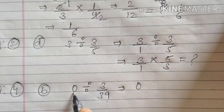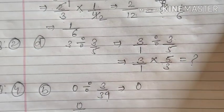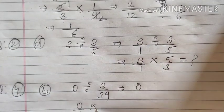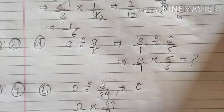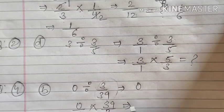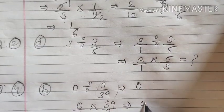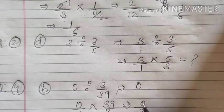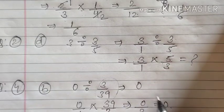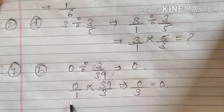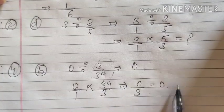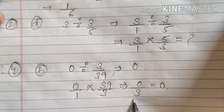If you want to calculate, you can calculate. Put here 1. 0 upon 1. Convert this divide into multiplication. Write down reciprocal of this number. 39 upon 3. Now you see, numerator into numerator. 0 into 39 is 0. Denominator into denominator is 3. 0 upon 3 will be 0. We are getting the same answer. That means, this is the shortcut. You can do it. And this is, if you want to verify or if you want to check, you can use this method.